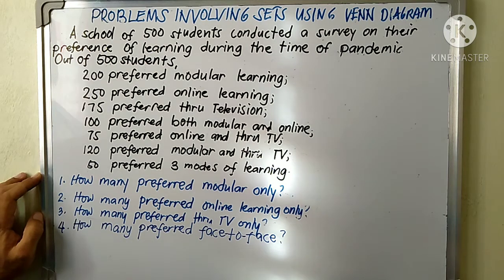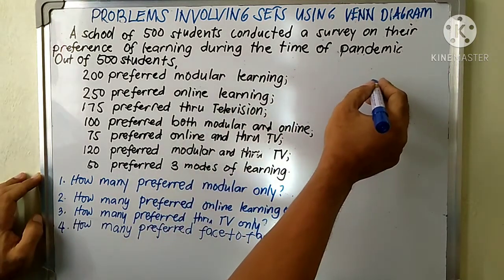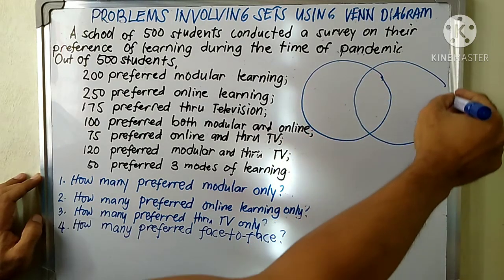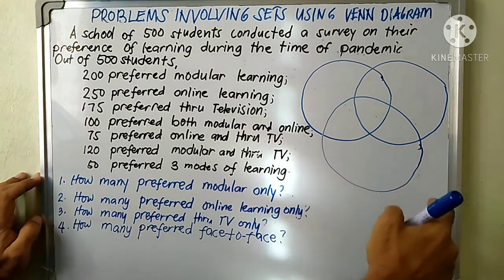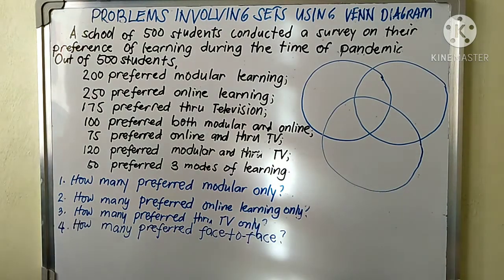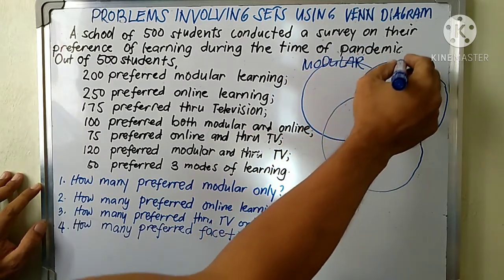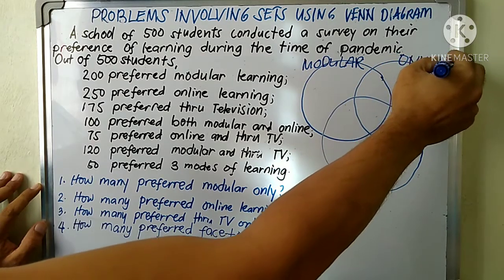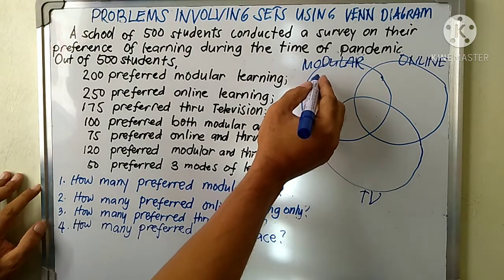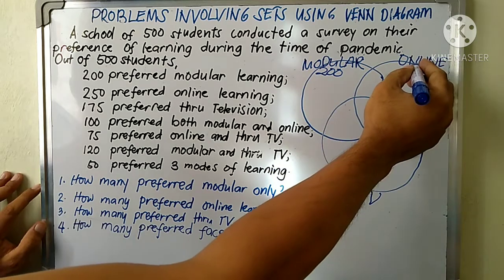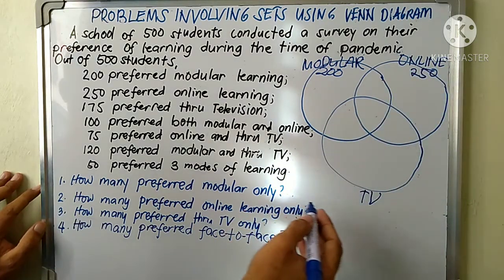Since there are three modes of learning, we have to use three circles in our Venn diagram. We label each circle: one for modular, one for online, and one for through TV. For modular, our figure is 200; for online, our figure is 250; for through television, our figure is 175.